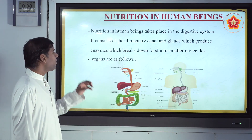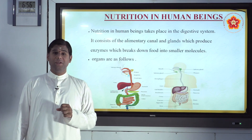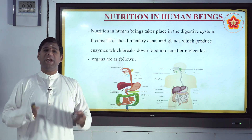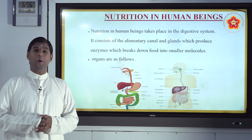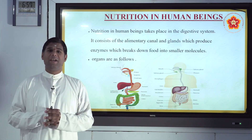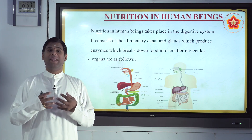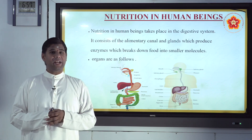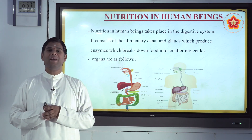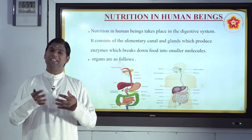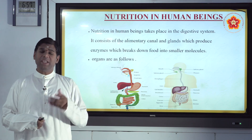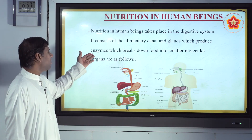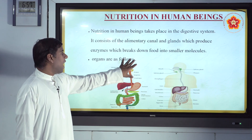Now let's see how nutrition in human beings takes place. Daily we eat food, it goes to the stomach, gets digested and we get energy. There are four to five stages: ingestion, digestion, assimilation, and egestion. The digestive system consists of the alimentary canal, which produces enzymes that break down food into smaller molecules.